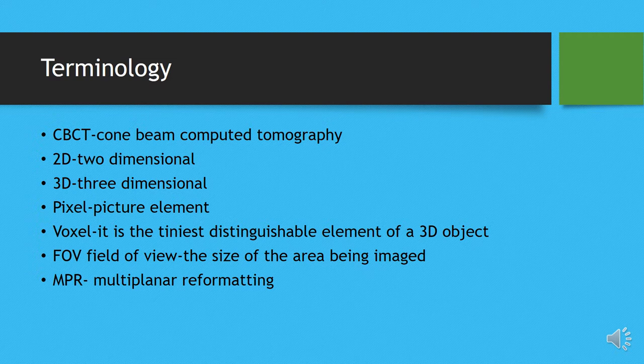Then there is a word called pixel and something called a voxel. I'll explain what a pixel and voxel are, although you might already have an idea. You use a digital camera or your mobile phone — your camera has a certain capacity measured in pixels, like 14 megapixel, 40 megapixel, or 108 megapixel. Then there is field of view, referred to as FOV, and MPR, which is multi-planar reformative. These are the terminologies you will commonly encounter when discussing CBCT.